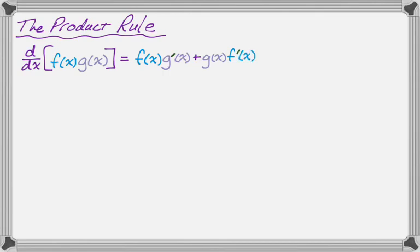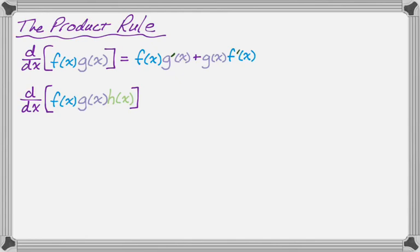Let's take a look at what this would look like if we had three functions. So if we had something like the derivative of f times g times h, what I do on these problems is I group — I tend to group just the first two functions together and call this the first function. So it's going to be first times derivative of the second, plus second times derivative of the first. You could also group g and h — it doesn't matter, you can rearrange them, but you have to take two of them as one and work on it that way.